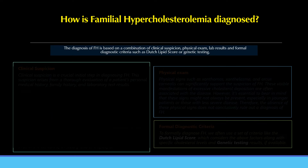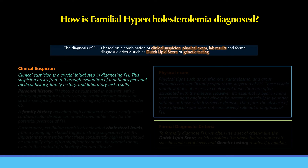How is familial hypercholesterolemia diagnosed? The diagnosis of FH is based on a combination of clinical suspicion, physical exam, lab results, and formal diagnostic criteria such as the Dutch Lipid Score or genetic testing. Clinical suspicion is a crucial initial step, arising from a thorough evaluation of a patient's personal medical history, family history, and laboratory test results.